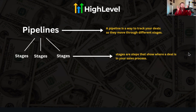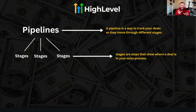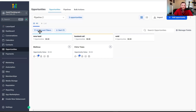A pipeline has multiple stages, and stages are steps that show where a deal is in your sales process — new lead, warm lead, hot lead, whatever they are in your pipeline. This is where the stages come into play. Pipelines have multiple stages; these are the stages. You have new lead, book call — they'll pop up like this on the dashboard.